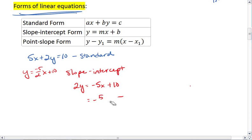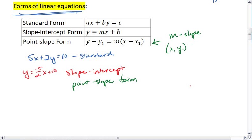We have another form and that's called point-slope form. Point-slope form, as you see above, is y minus y1 equals m times (x minus x1), where m is still the slope and (x1, y1) is a point on the line.